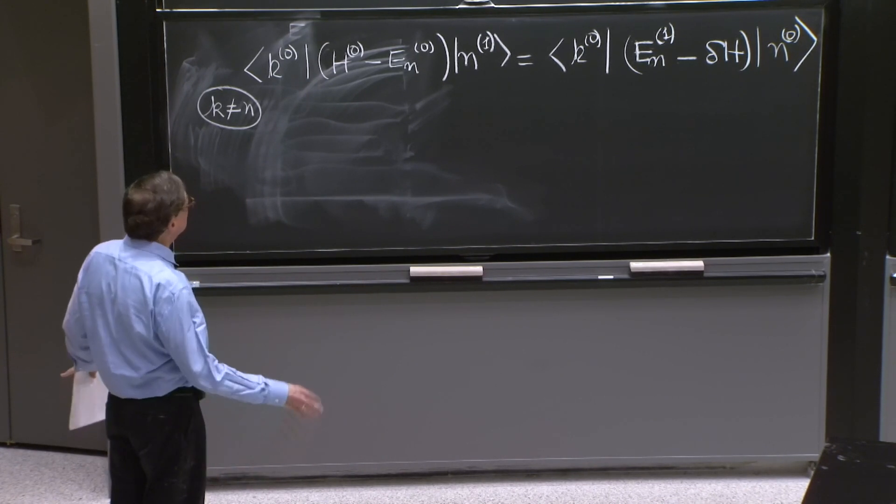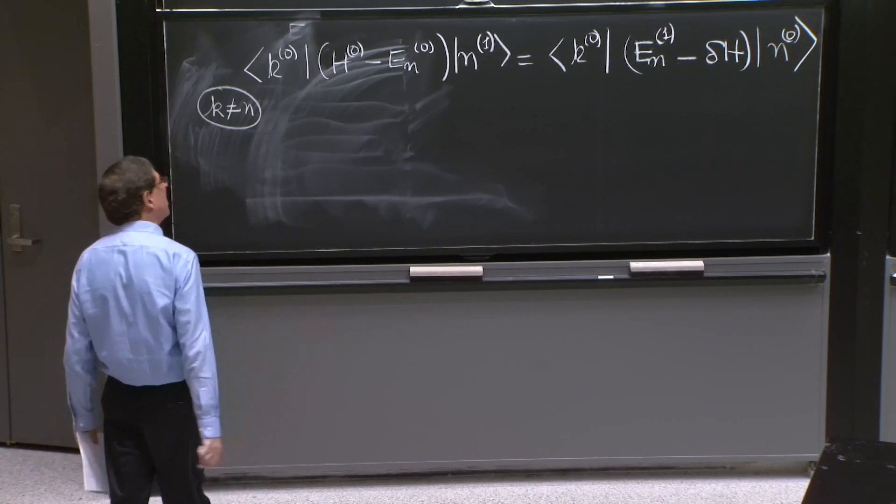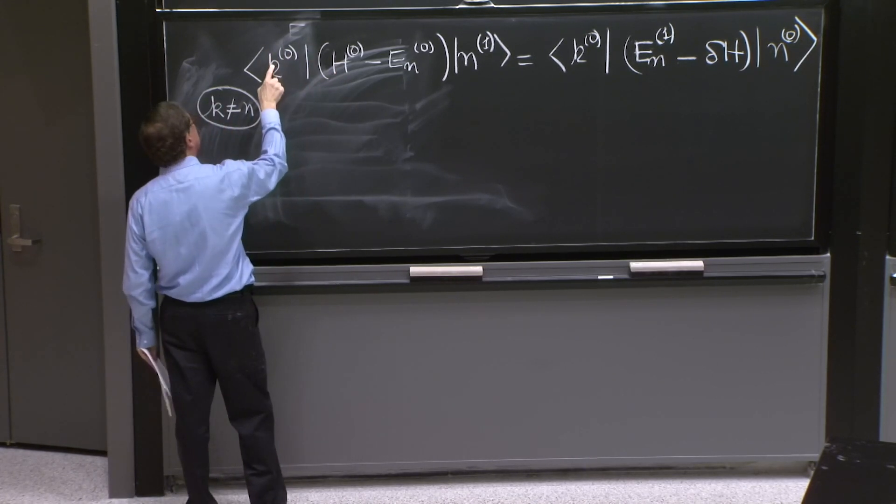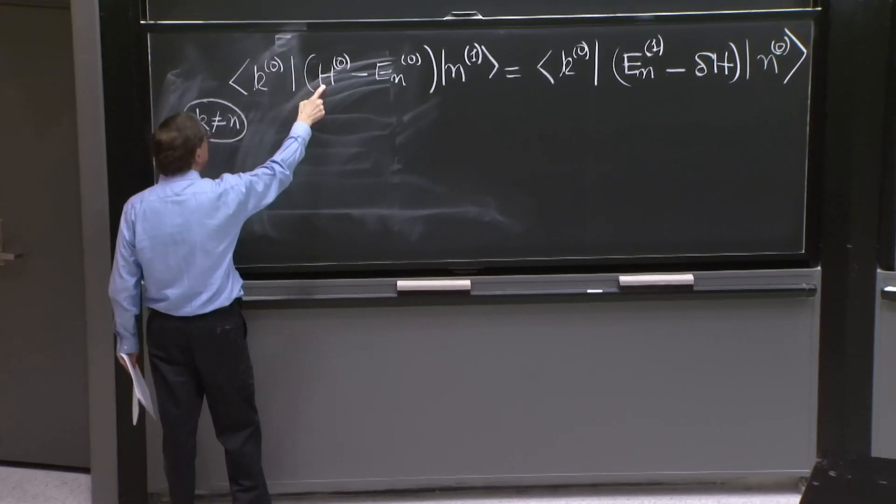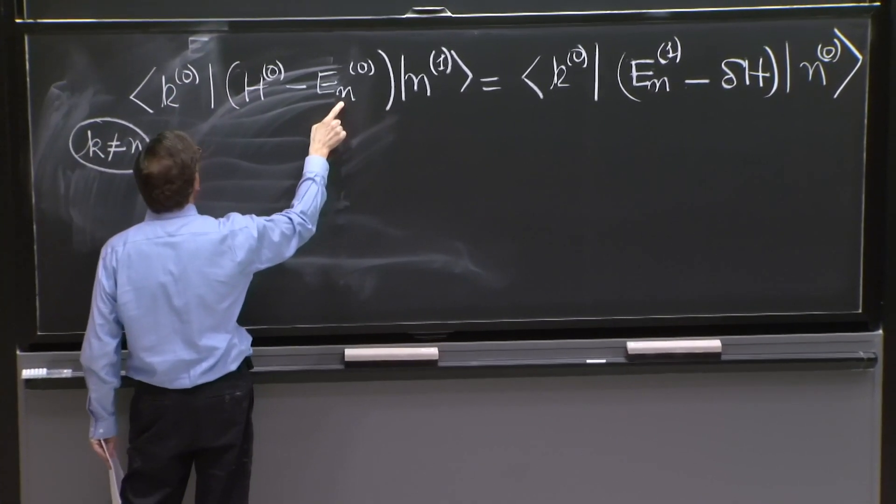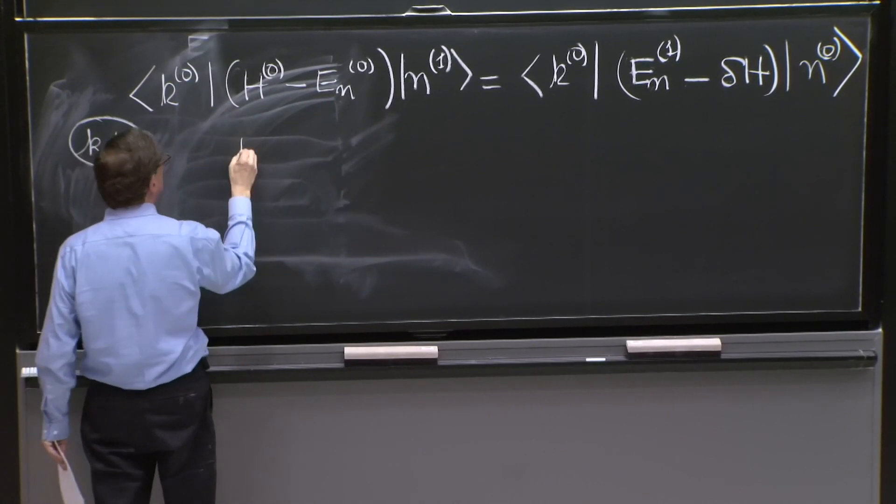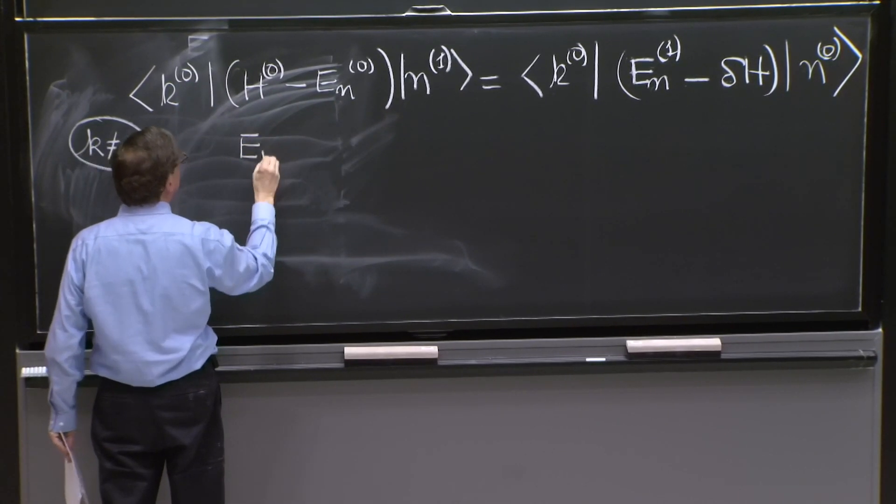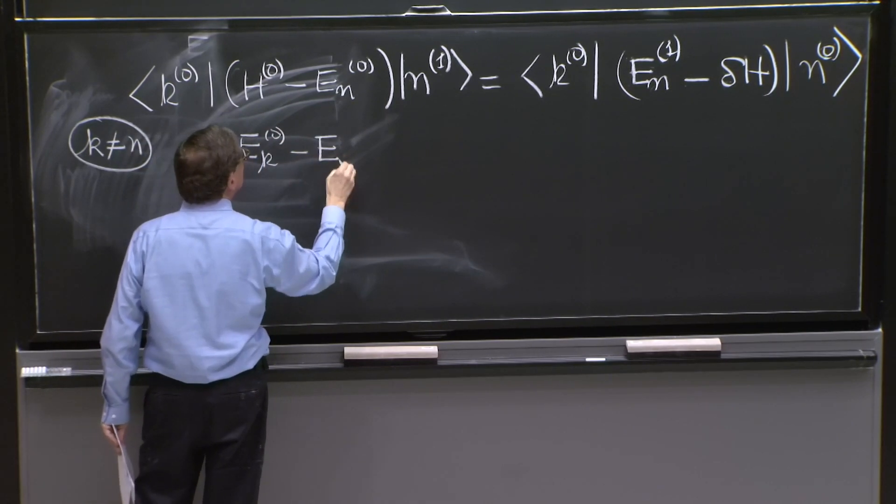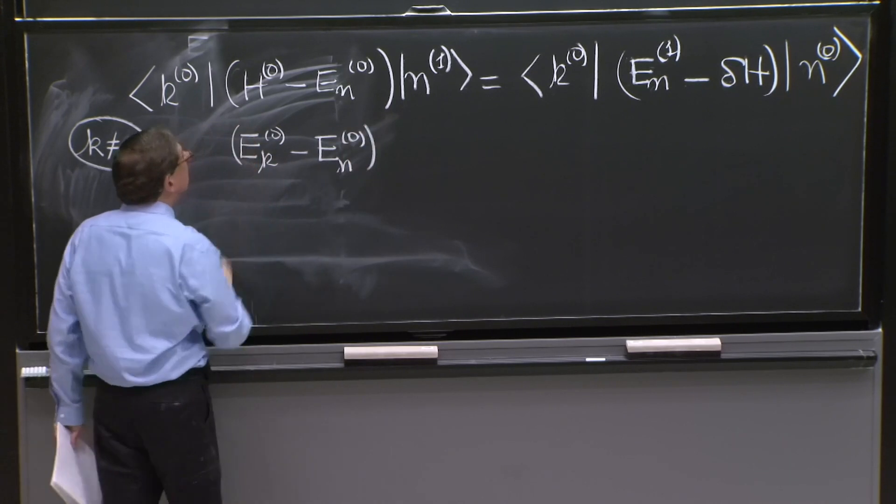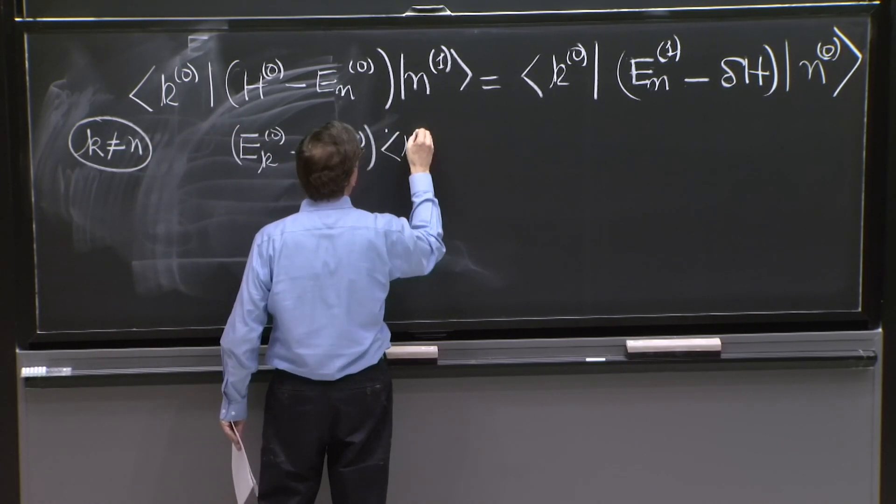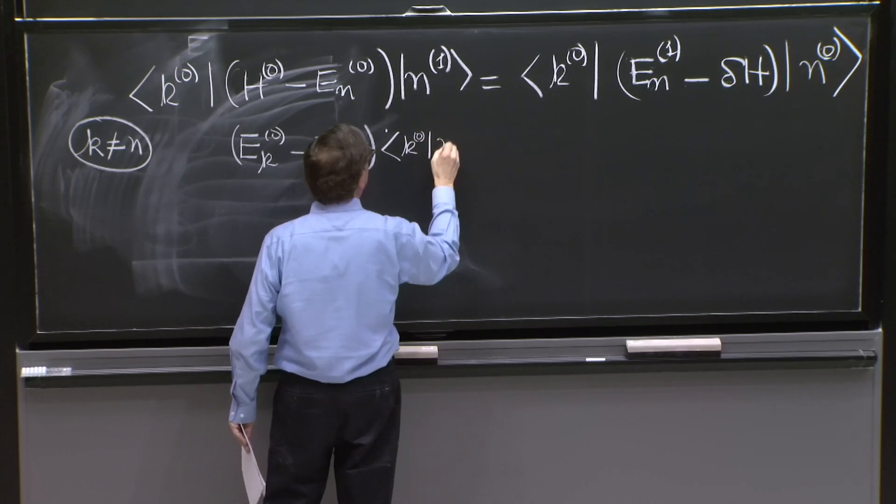So you have to look at these things and try to remember a little of the definitions we've put. So H0, we know what it gives on k0—it gives you a number, the energy of that state. So this is another number, so that's great.